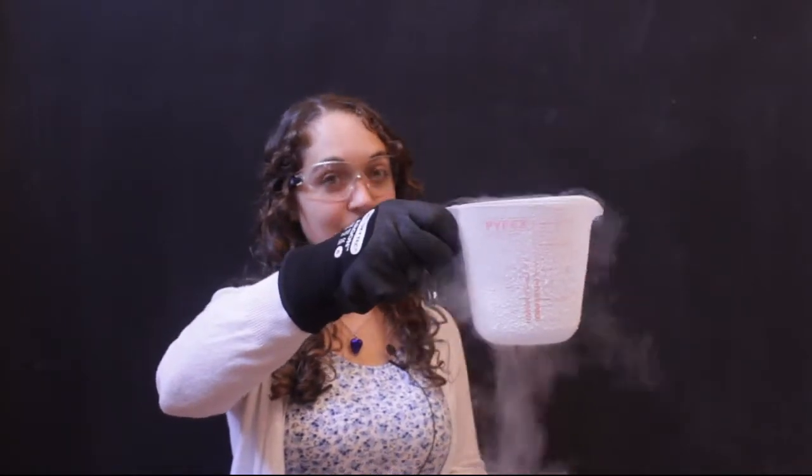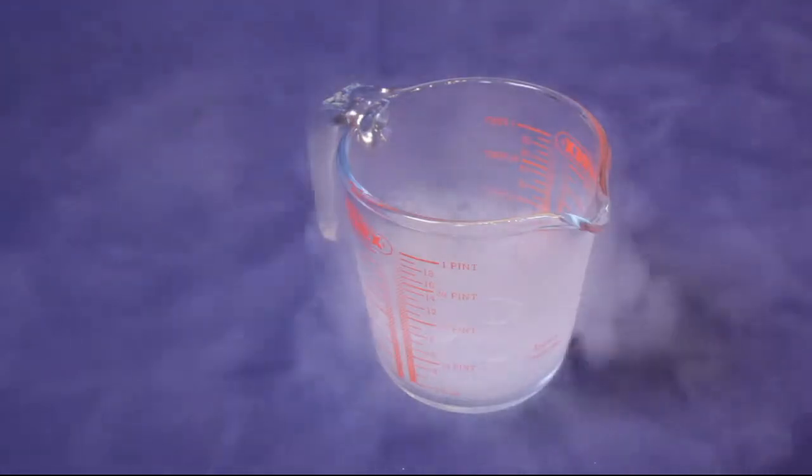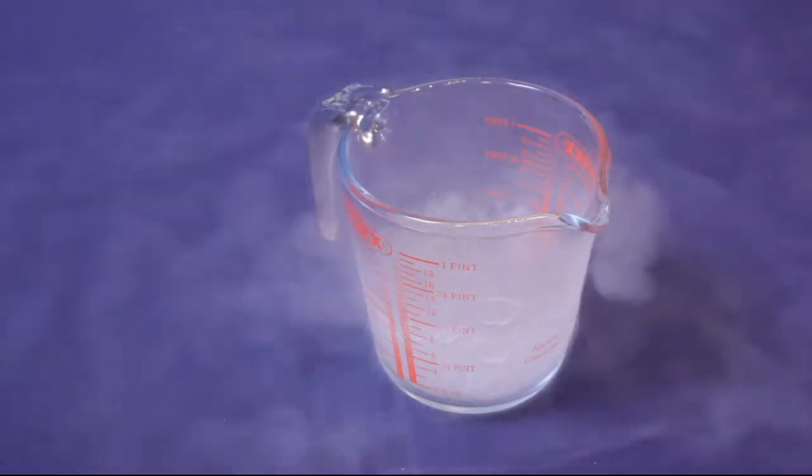This is liquid nitrogen, and it's cold. I mean, it's really, really cold. Outside today, it's probably about 10 degrees C. Your fridge at home will be something like 4 degrees C. Your freezer is probably at about minus 20. The average temperature of Antarctica in winter is about minus 60.